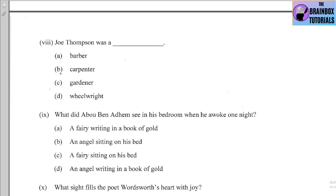Number eight: Joe Thompson, from 'Angel in Disguise,' was a (a) barber, (b) carpenter, (c) gardener, or (d) wheelwright. The correct option is (d) — wheelwright.